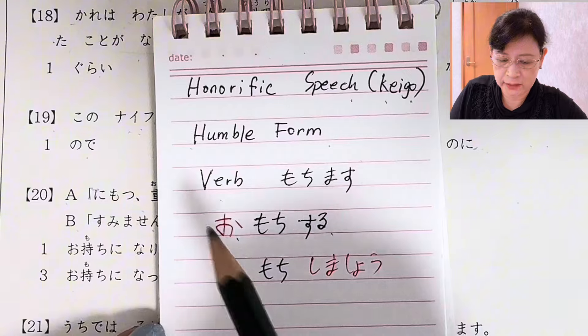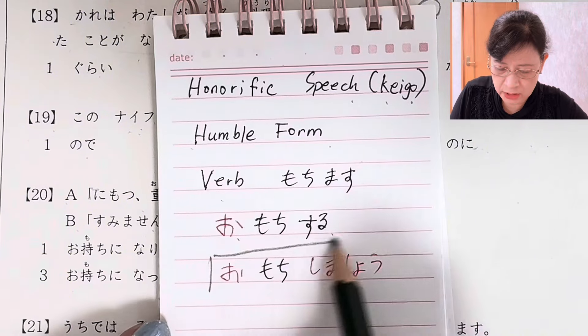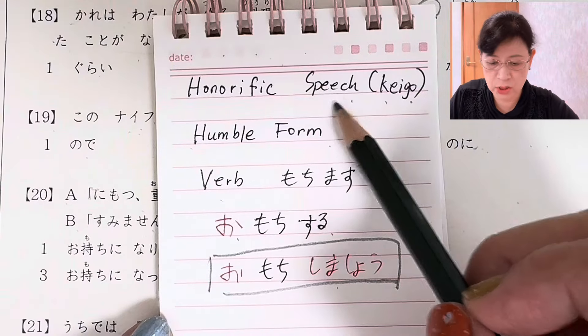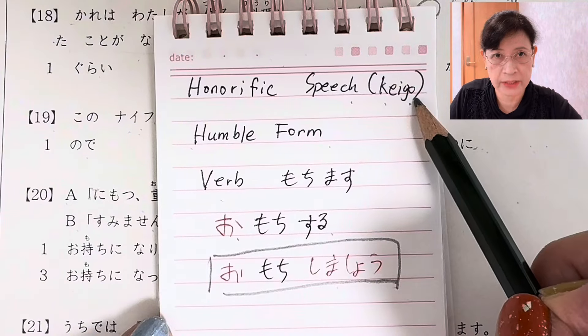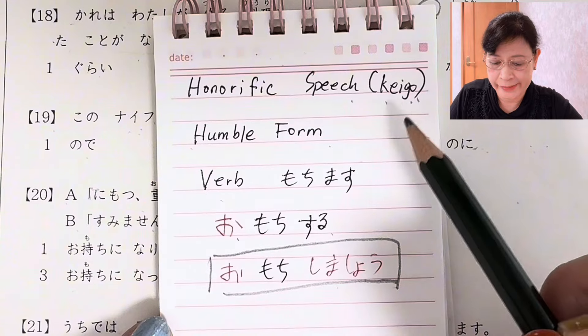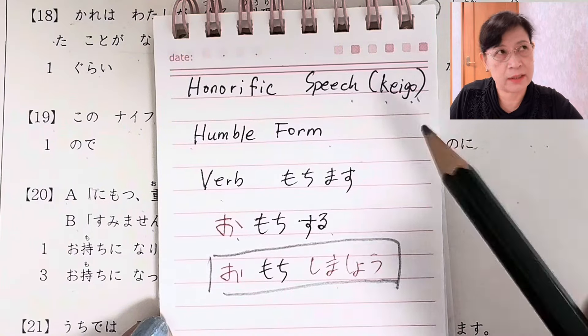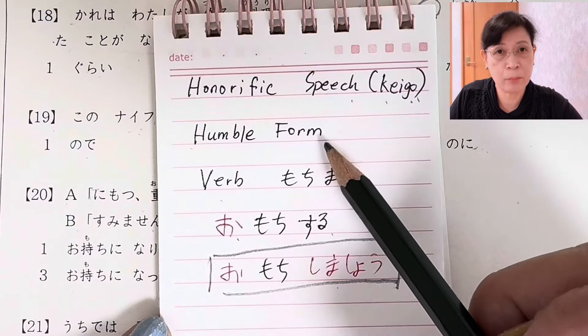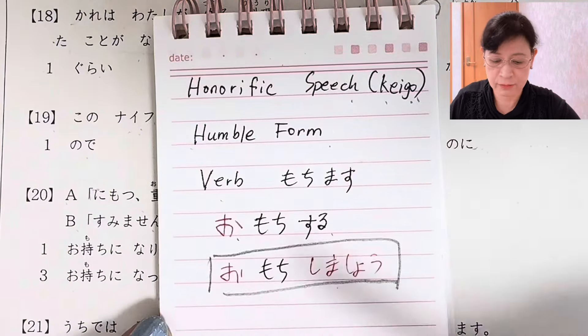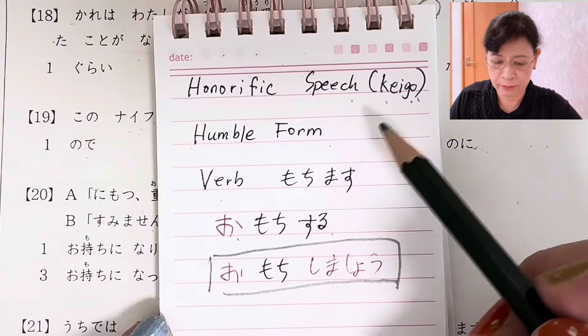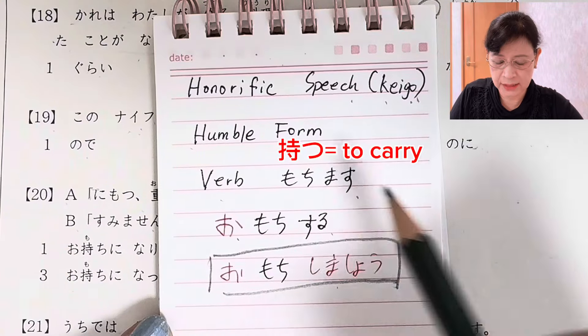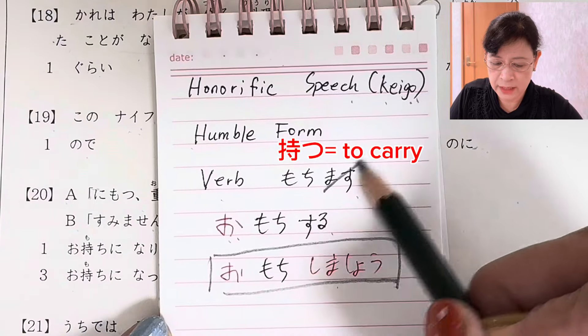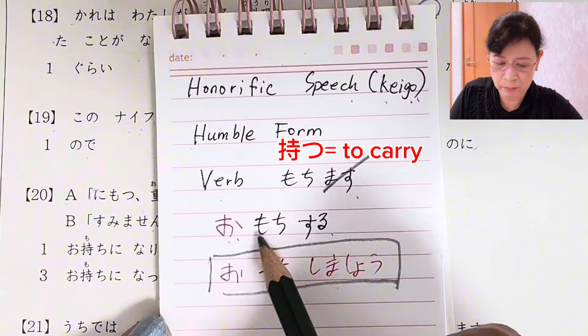So we have お持ちしましょう. This is our grammar point. Let me explain it this way. We have the answer お持ちしましょう. This is a kind of honorific speech, which is 敬語. And under 敬語, there are kinds of polite or respectful ways of speech. One of it is humble form, wherein you humble yourself. So we have the verb 持ちます.